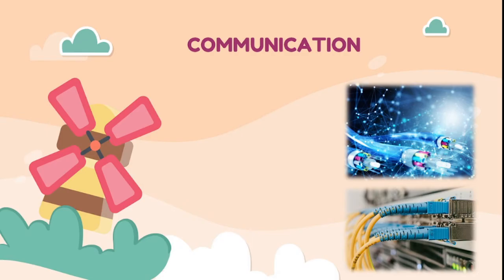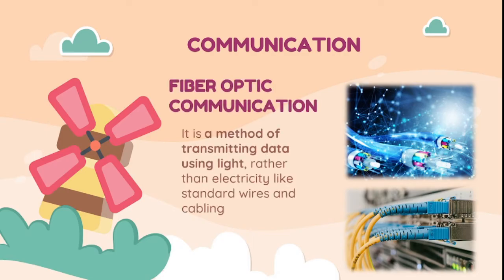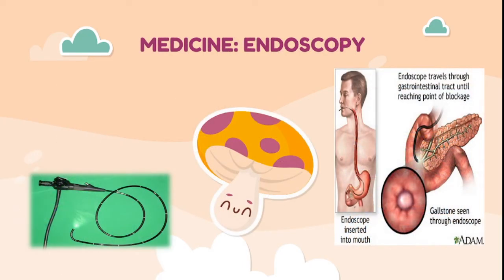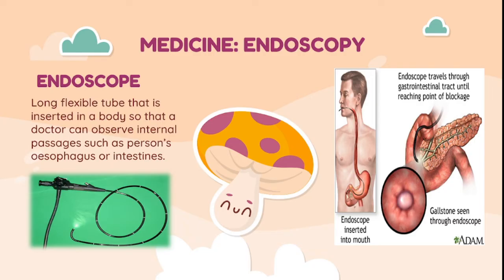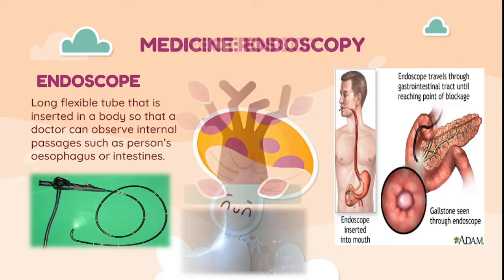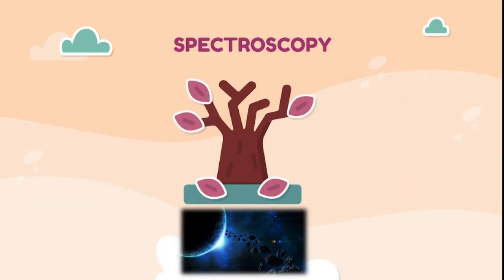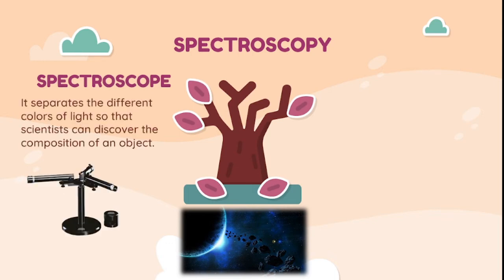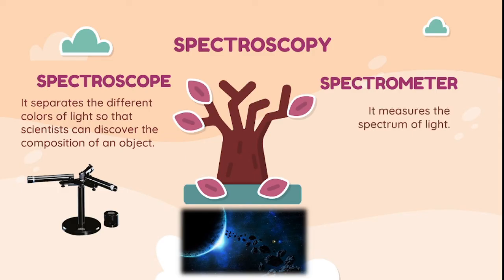In communication, the principles of fiber optics are applied — a method of transmitting data using light rather than electricity, like standard wires and cabling. Visible light is also applied in medicine through endoscopy. An endoscope is a long, flexible tube inserted into a body so that a doctor can observe internal passages such as a person's esophagus or intestines. It is also applied in spectroscopy instruments. A spectroscope separates the different colors of light so that scientists can discover the composition of an object. A spectrometer is used for measuring the spectrum of light.